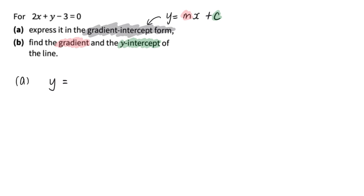minus 2x on both sides and plus 3 on both sides such that I have only y left on the left-hand side of this equation. Negative 2x and positive 3 is on the right-hand side of this equation.